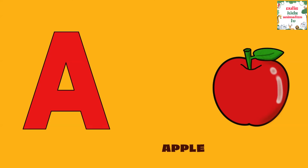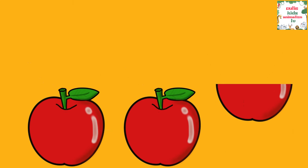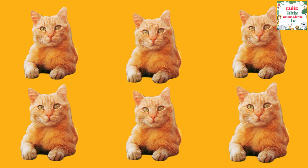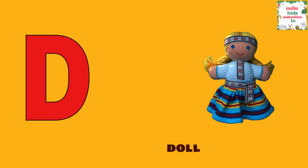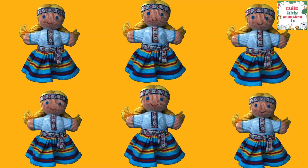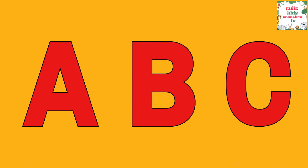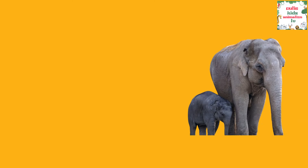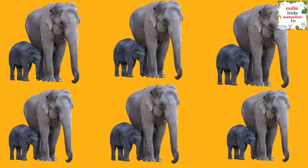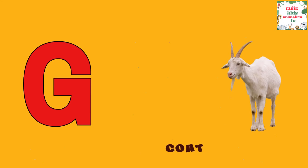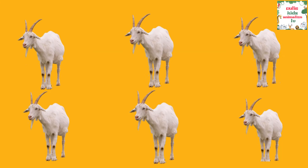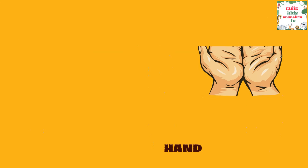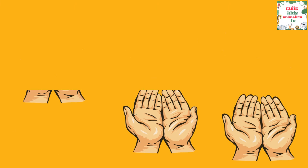A is for Apple, A-A-Apple. B is for Ball, B-B-Ball. C is for Cat, C-C-Cat. D is for Doll, D-D-Doll. E is for Elephant, E-E-Elephant. F is for Frog, F-F-Frog. G is for Goat, G-G-Goat. H is for Hand, H-H-Hand.